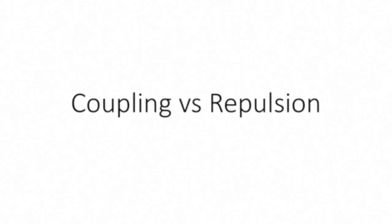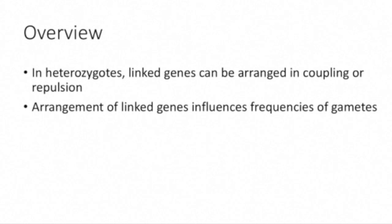Hi, my name is Fiona, and today we're going to be talking about coupling and repulsion. So a bit of an overview: in heterozygotes, linked genes can be arranged in either coupling or repulsion. It is important to know how the alleles are arranged on the chromosomes in relation to one another, because different arrangements can result in different frequencies of gametes.